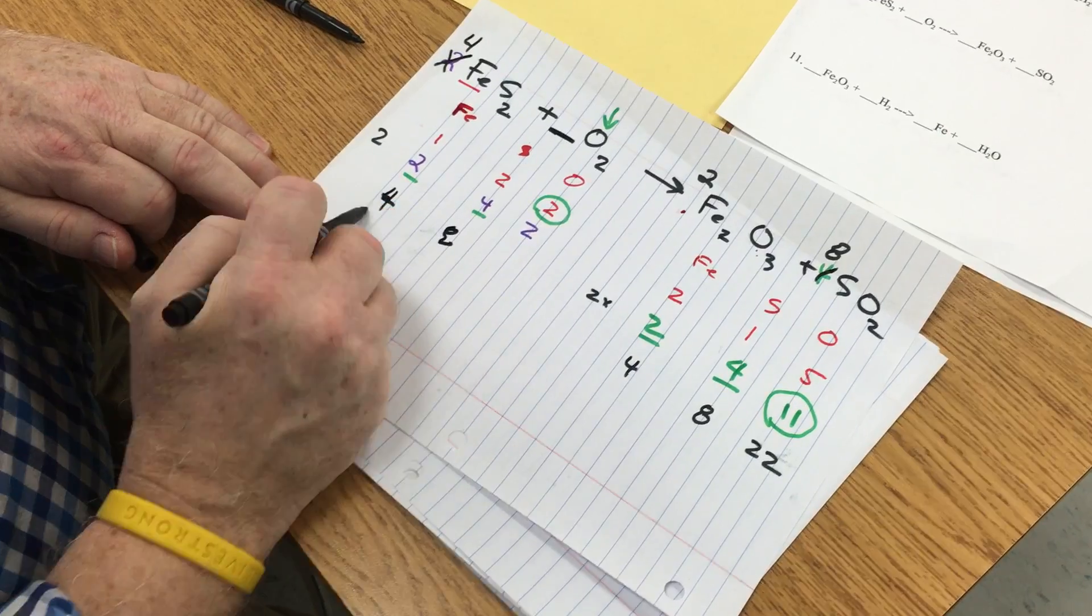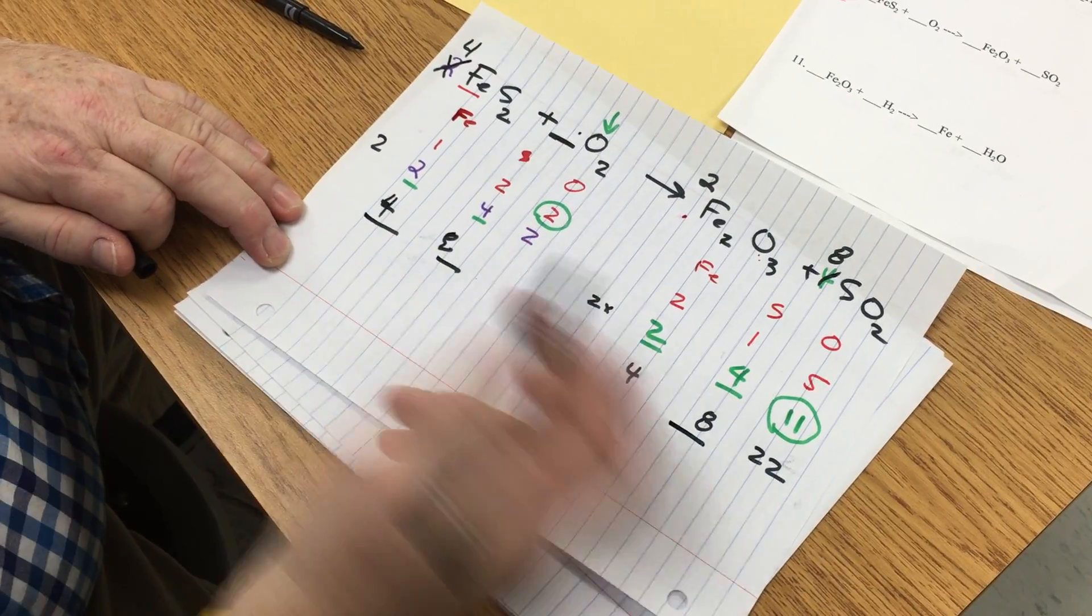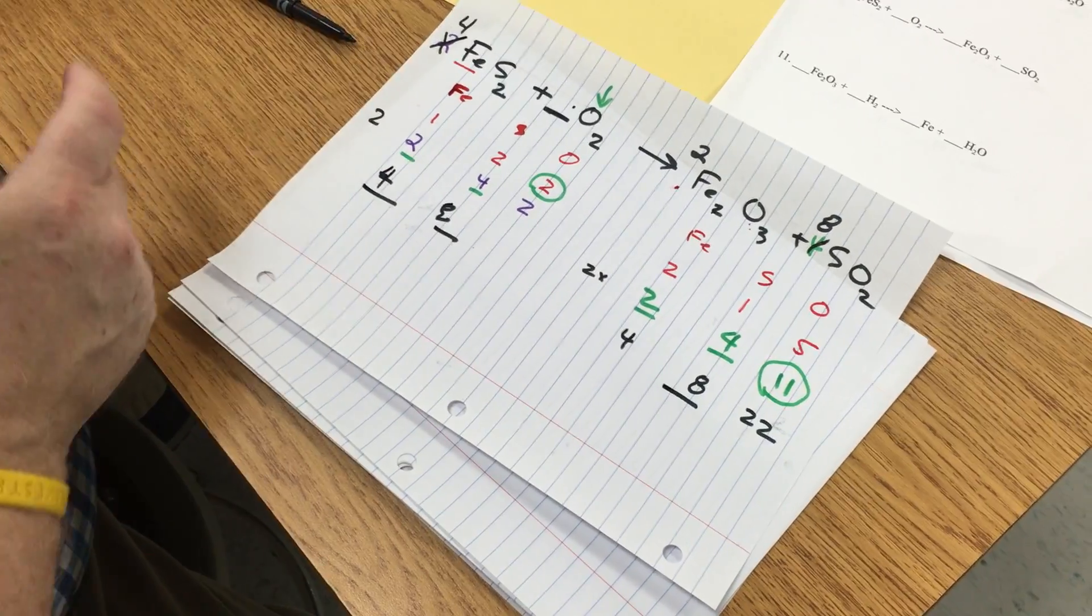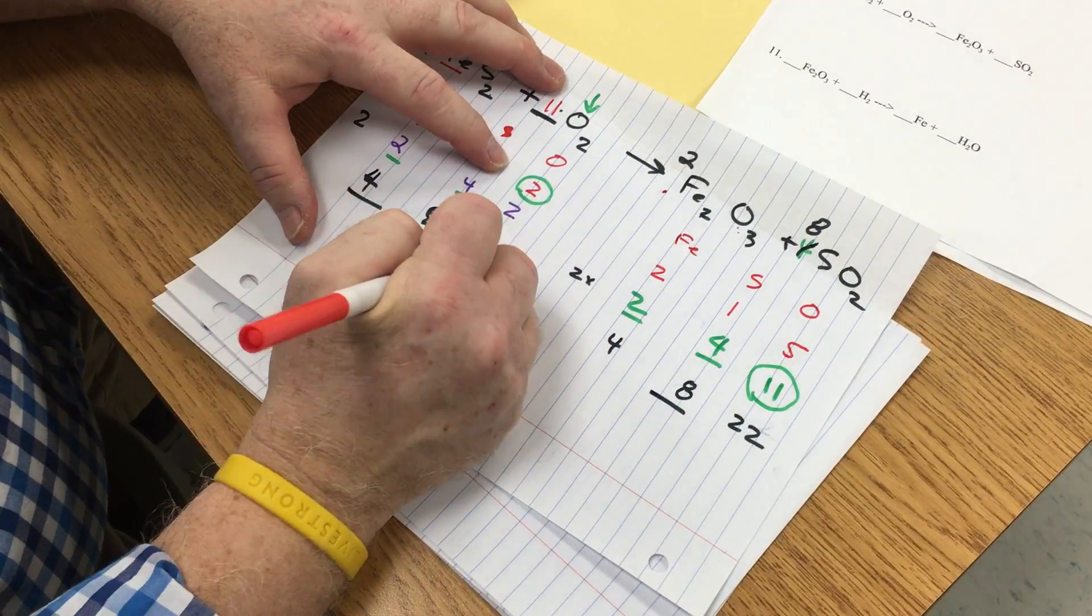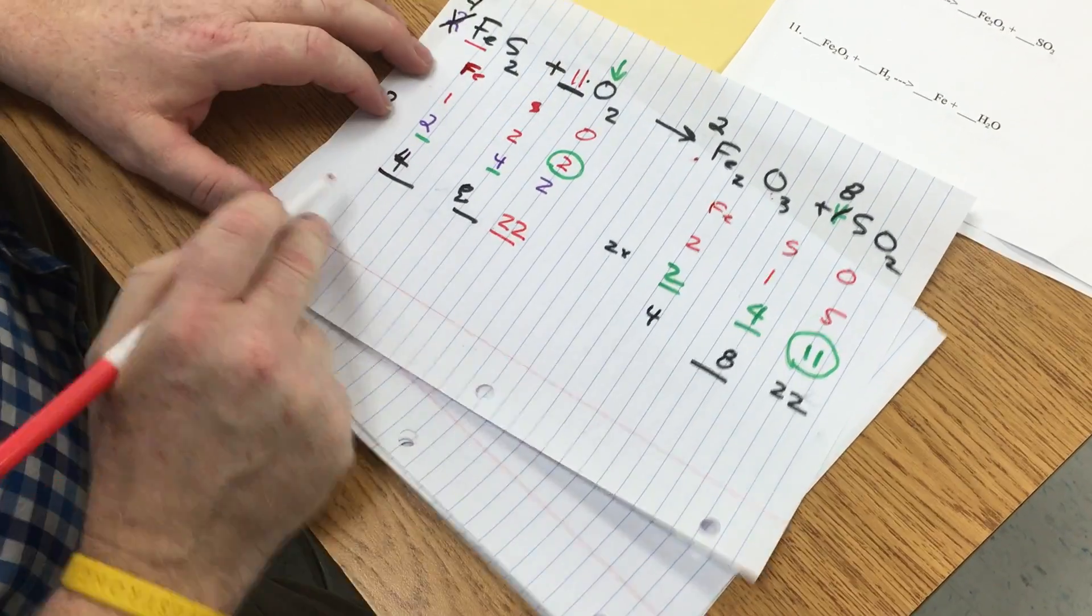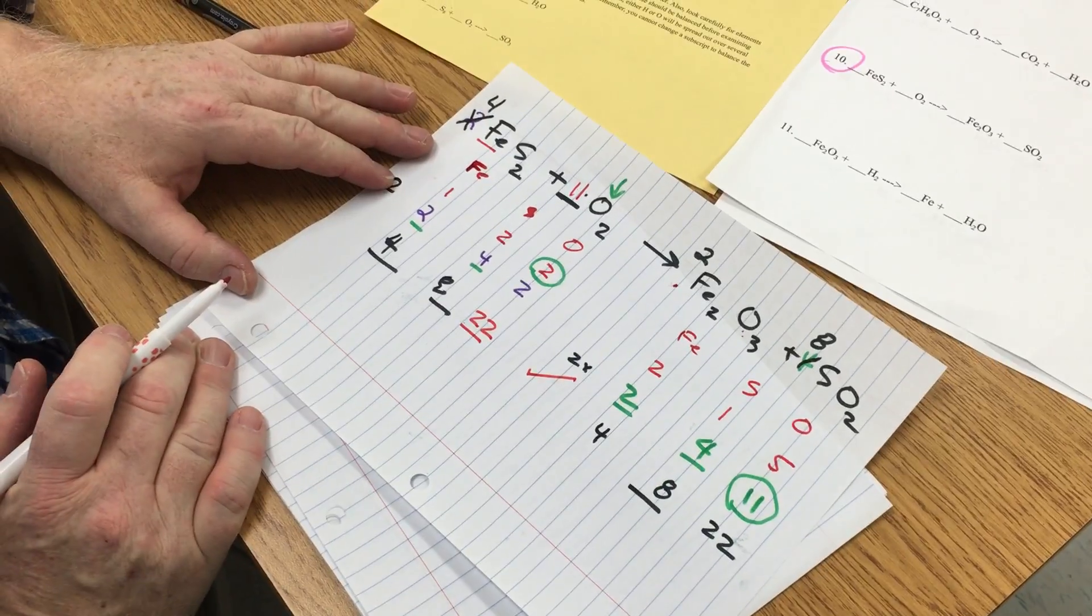And how do I get 22 oxygens? I put a coefficient of eleven in front of there, which gives me 22 oxygens, and I am balanced. Thank you for playing, no problem.